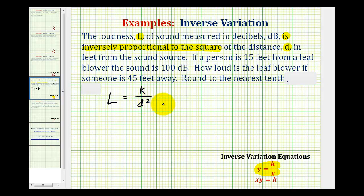And then from here, we're told that if a person is 15 feet from a leaf blower, the sound is 100 decibels. So this is telling us that if d is equal to 15, then L is going to be equal to 100. So we can use this information to find the variation constant k, and then answer the question about how loud the leaf blower is from 45 feet.